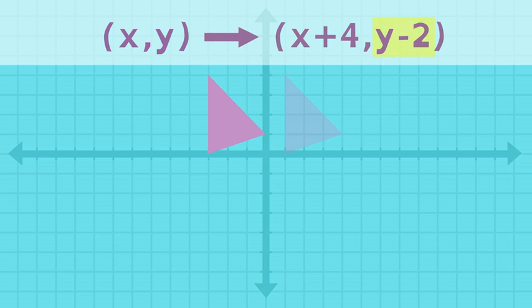And if we use negative 2 on the y-axis, then we know to move the shape 2 down on the coordinate plane. Now we know which direction to slide the shape.